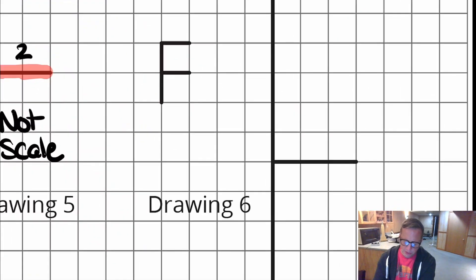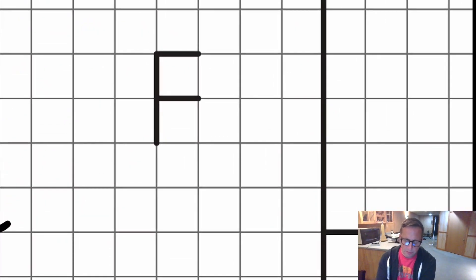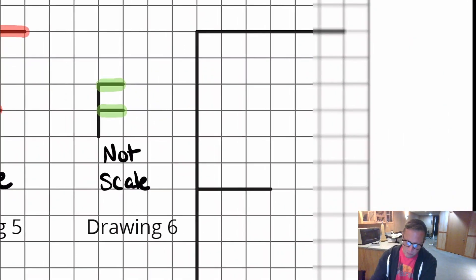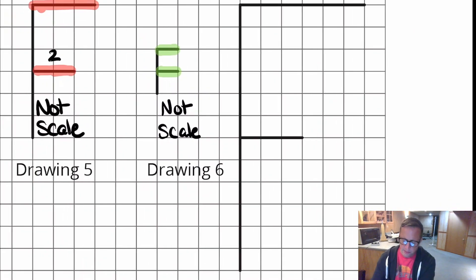And then drawing six, the smallest drawing of them all, that one is not to scale because these two parts of the F are equal. And it's not a one to one ratio, it's a two to one ratio, or a one to two, depending on how you're looking at it. But yeah, that's not to scale.